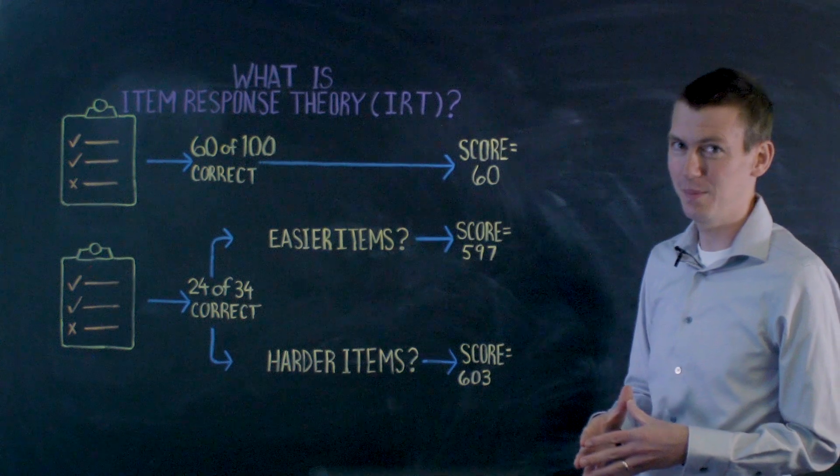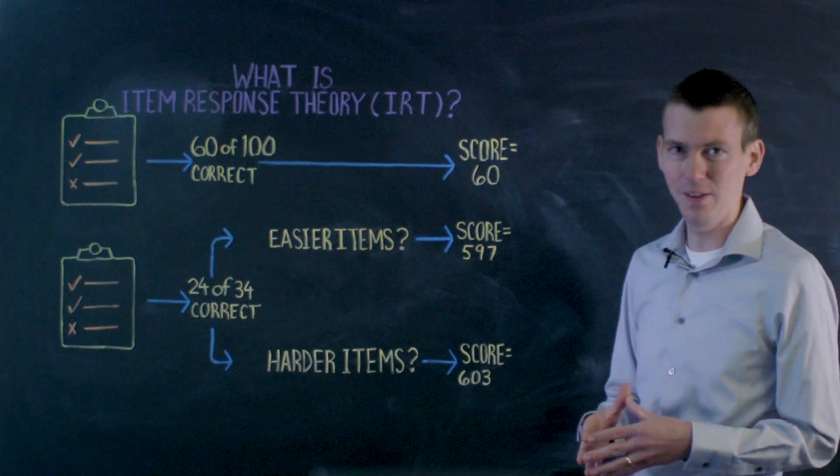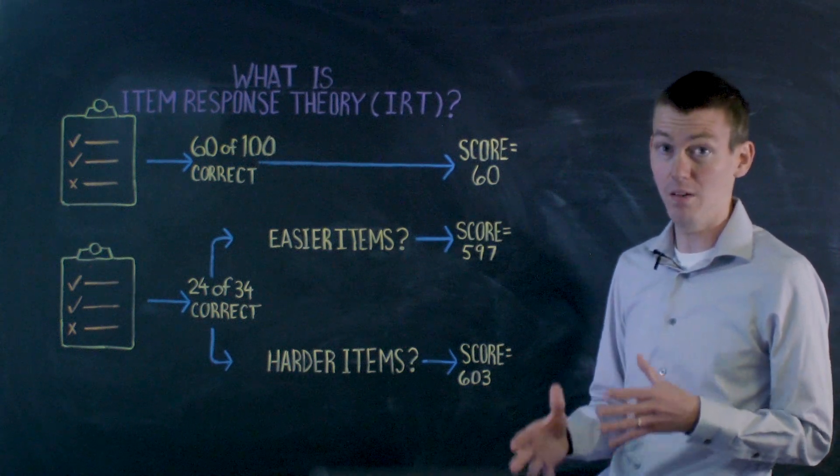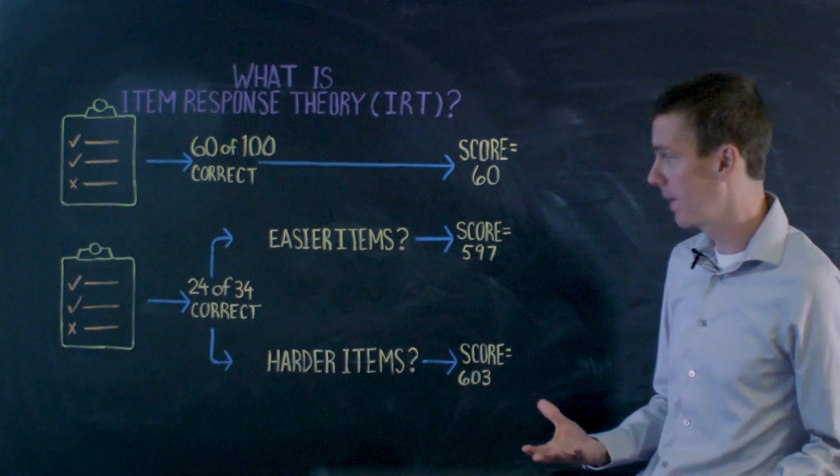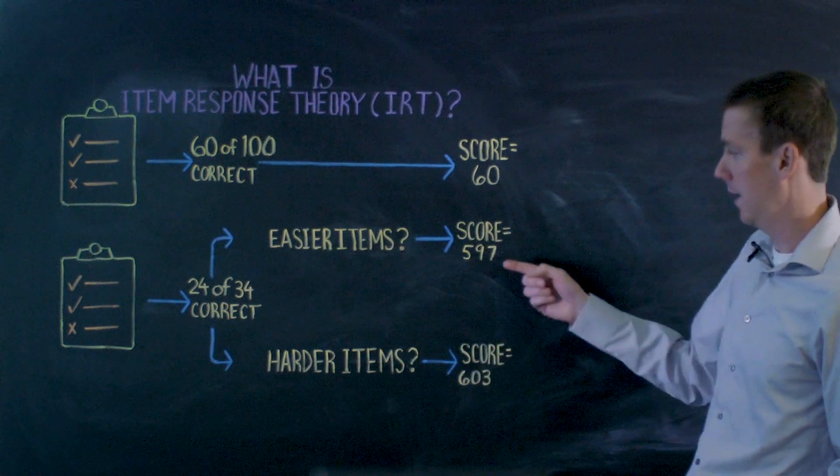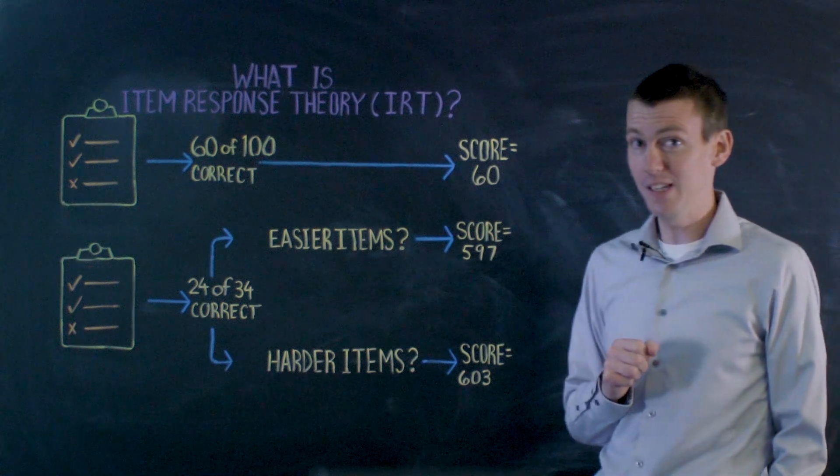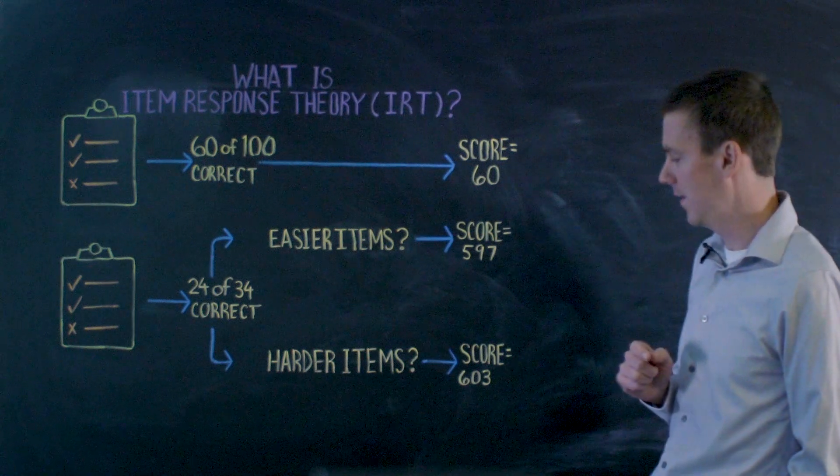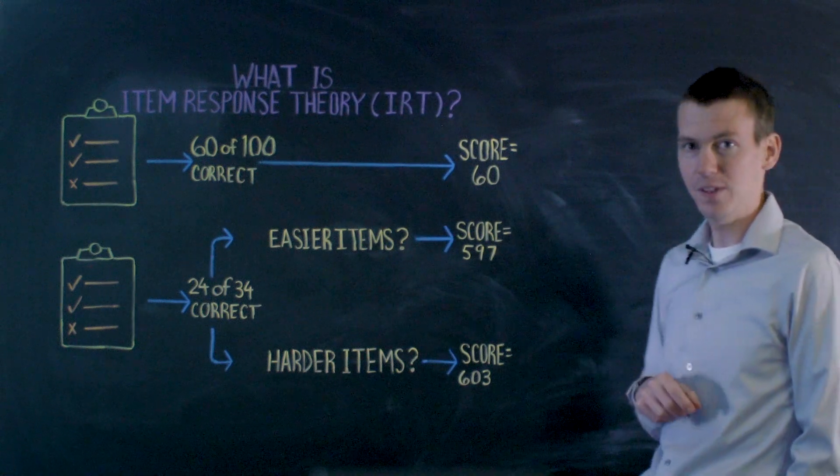Well, Item Response Theory models look at the properties of the test items that the student is getting right or wrong to figure out a score. If they get the easier items, that's where they might end up with that score of 597. But if they got a harder set of items, they would get a score of 603.